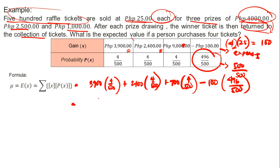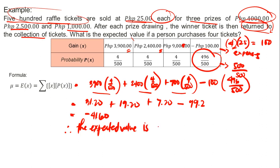Let's get the expected value. We multiply the outcome by its corresponding probability and add them all together. 3,900 times 4/500 plus 2,400 times 4/500 plus 900 times 4/500 minus 100 times 496/500. That gives us 31.20 plus 19.20 plus 7.20 minus 99.2, which equals negative 41.60. Therefore, the expected value is negative 41.60.